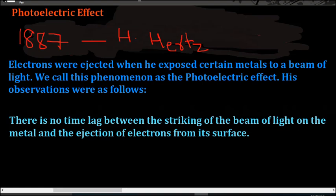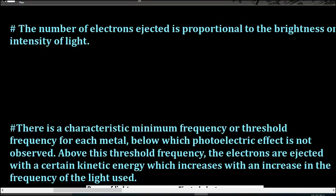When a beam of light strikes the metal, the ejection of electrons takes place simultaneously from its surface — that is, there was no delay in the ejection of electrons when the beam of light strikes the surface. The second observation was that the number of electrons ejected is proportional to the brightness or intensity of light. If the intensity is large, then the number of electrons ejected will also be very large; if the intensity is low, then fewer electrons are ejected.